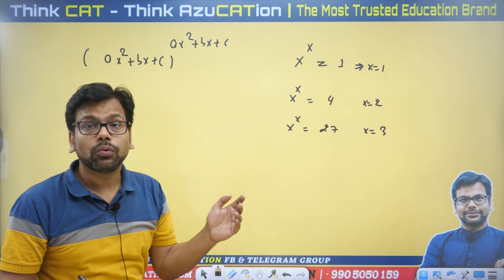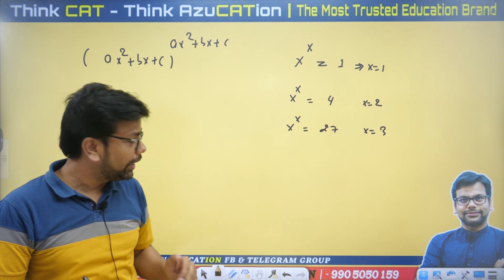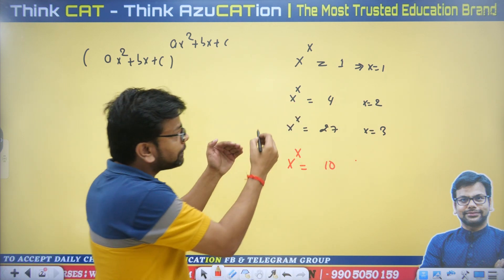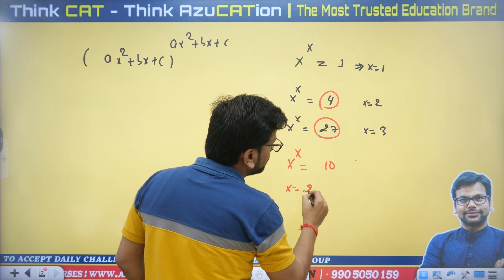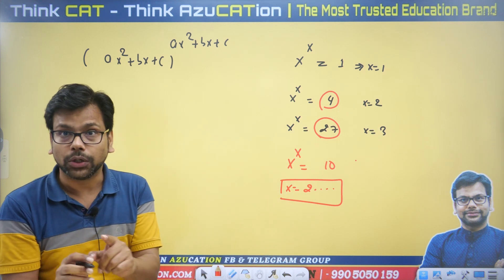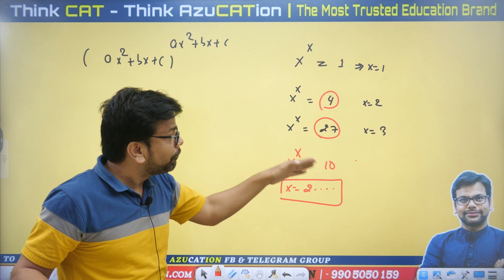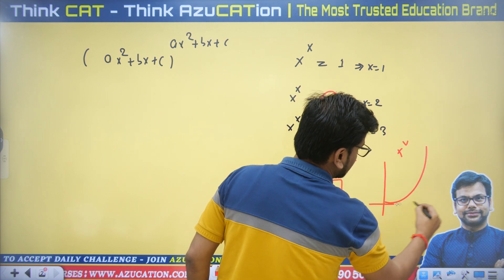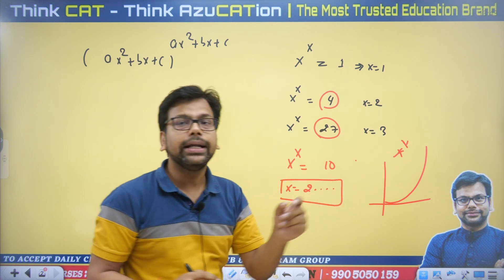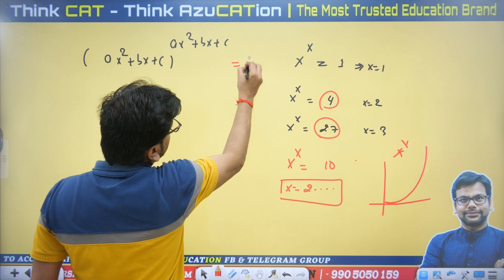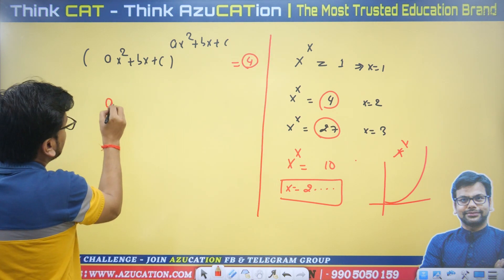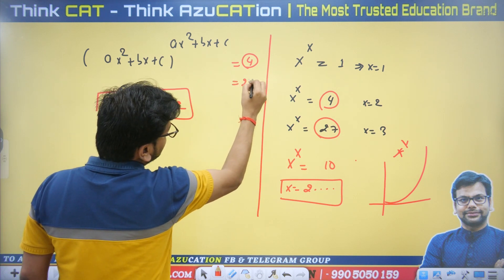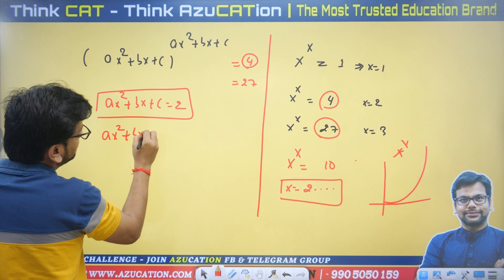The graph of x^x leads to a unique value for any constant. For example, if x^x equals 10, this is between 4 and 27, so the value of x would be 2-point-something — and this 2-point-something is a unique value. There is no other value apart from 2-point-something which makes x^x equal to 10. So if this expression equals 4, we can say ax² + bx + c = 2. If this expression is 27, then ax² + bx + c = 3.